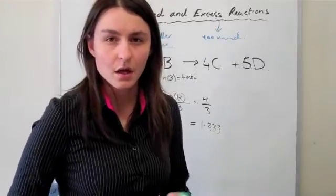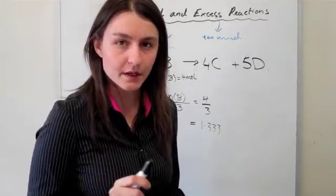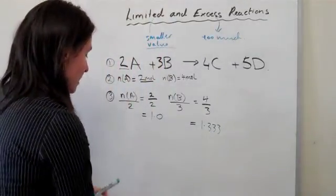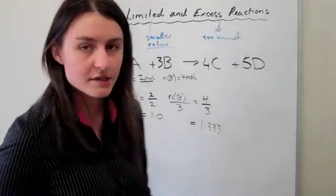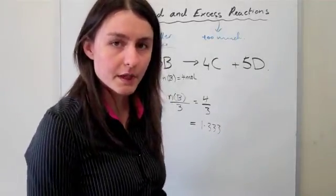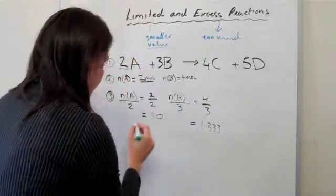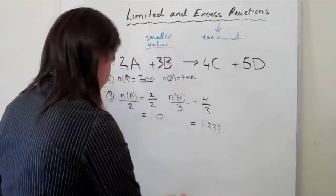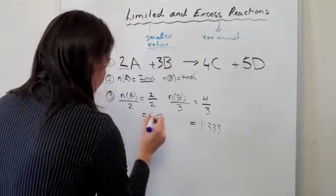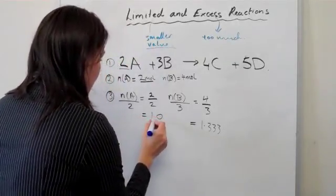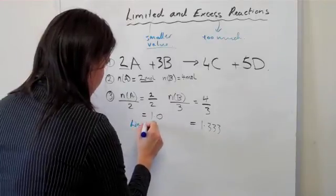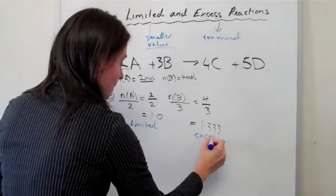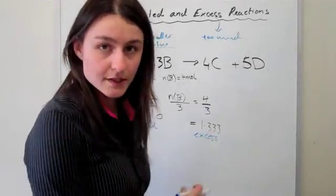Now the purpose of the n/coef ratio is to work out which number is bigger, which number is smaller. Obviously now you can tell that this number is smaller, this number is larger. So what that tells us is the smaller one is limited and the bigger one is excess. What we've now figured out is that this one is going to be limited and that one is excess. That is how you work out which one is limited and which one is excess by referring to the n/coef ratios.